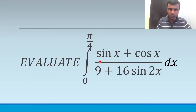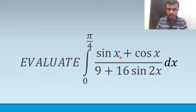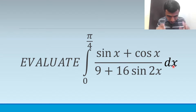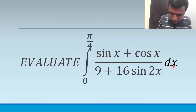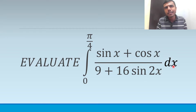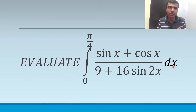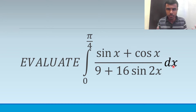Here I need to find out the integral from 0 to π/4 of (sin x + cos x) divided by (9 + 16 sin 2x) dx. This is not tough but a tricky question. You should know how to solve this. This involves a very unique way of solving it — pretty different from the other questions we have done so far.